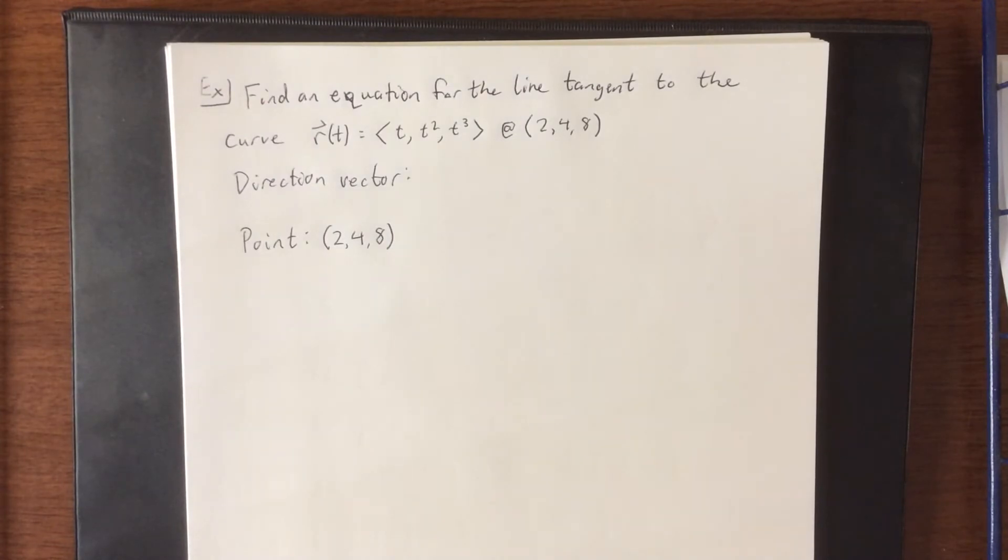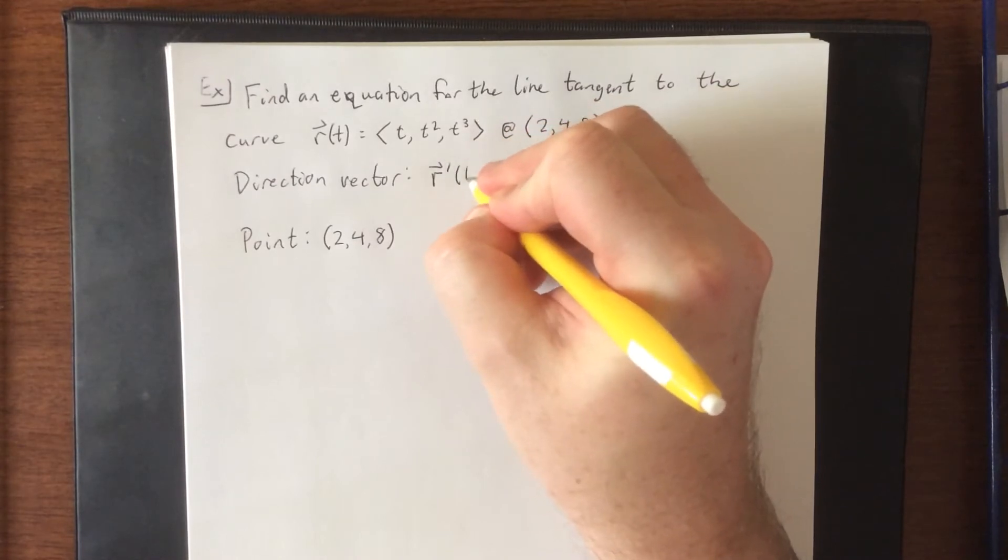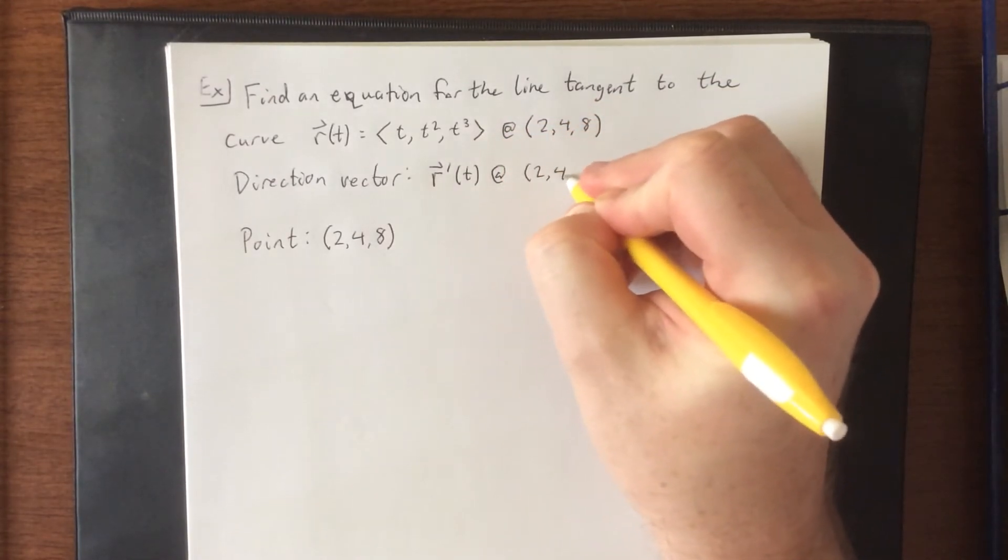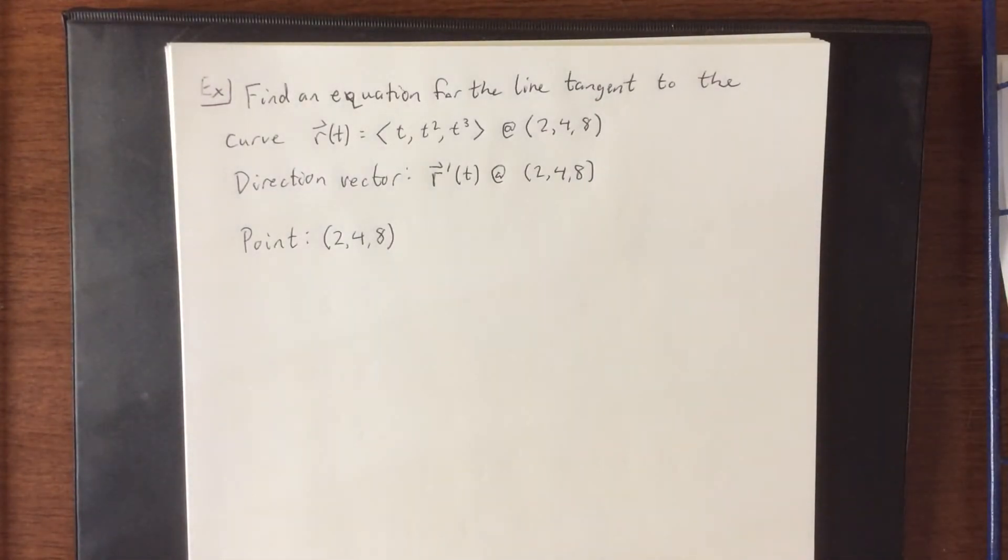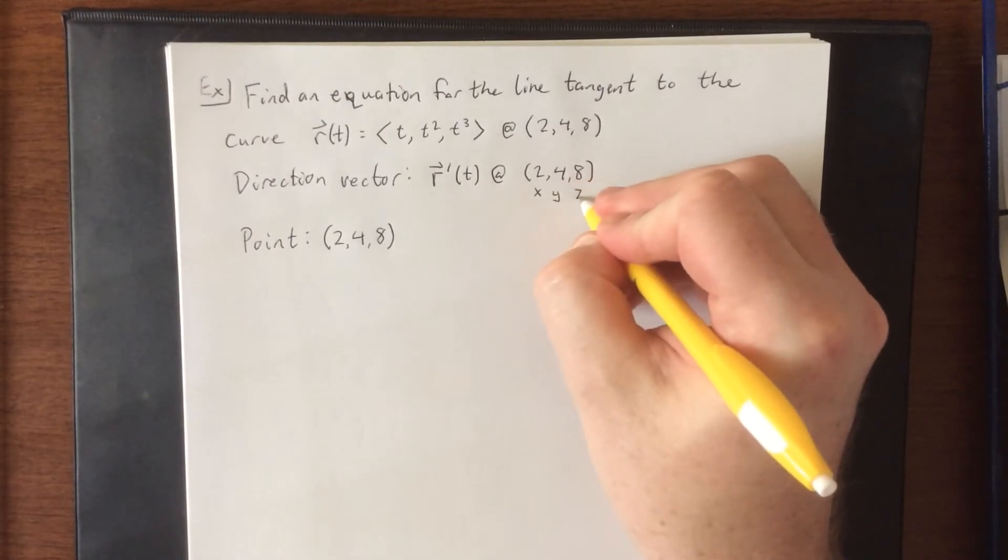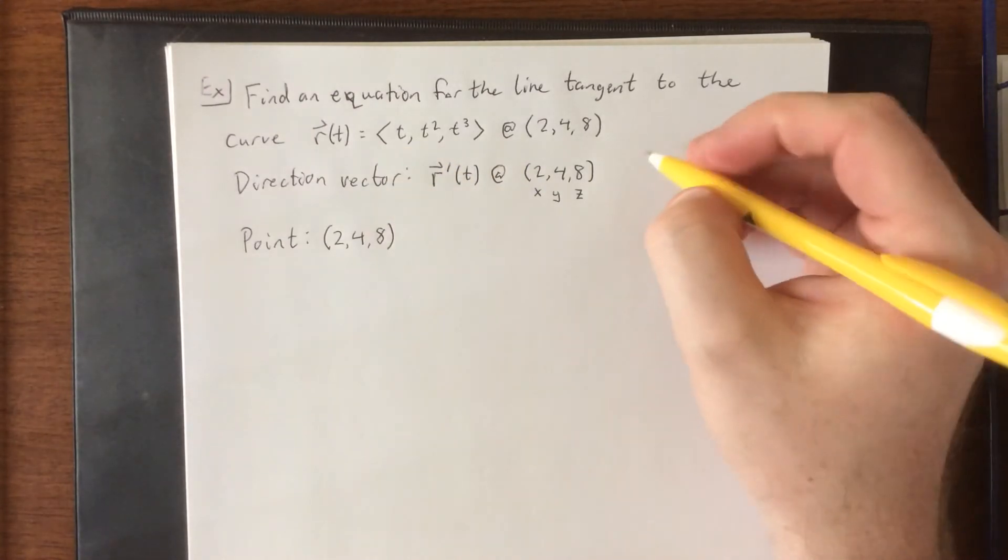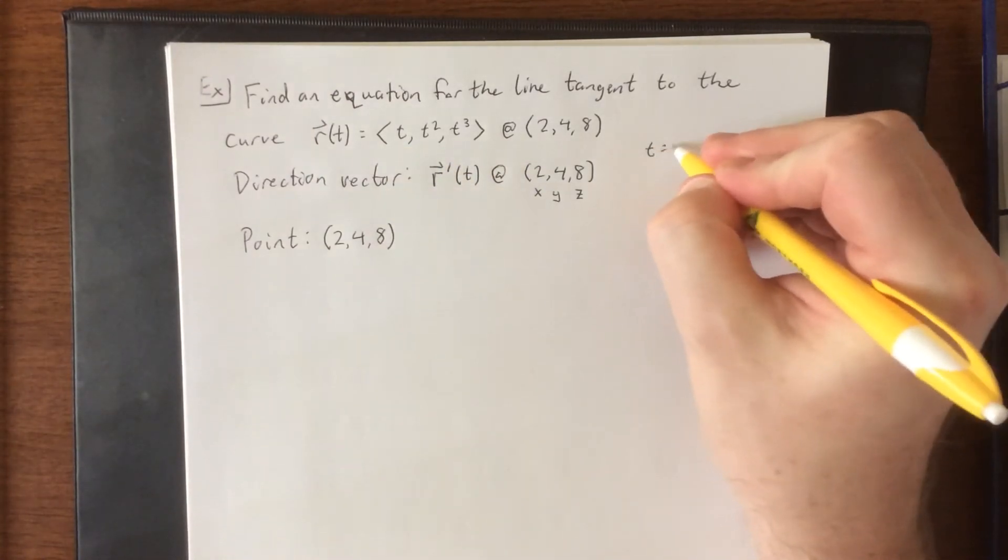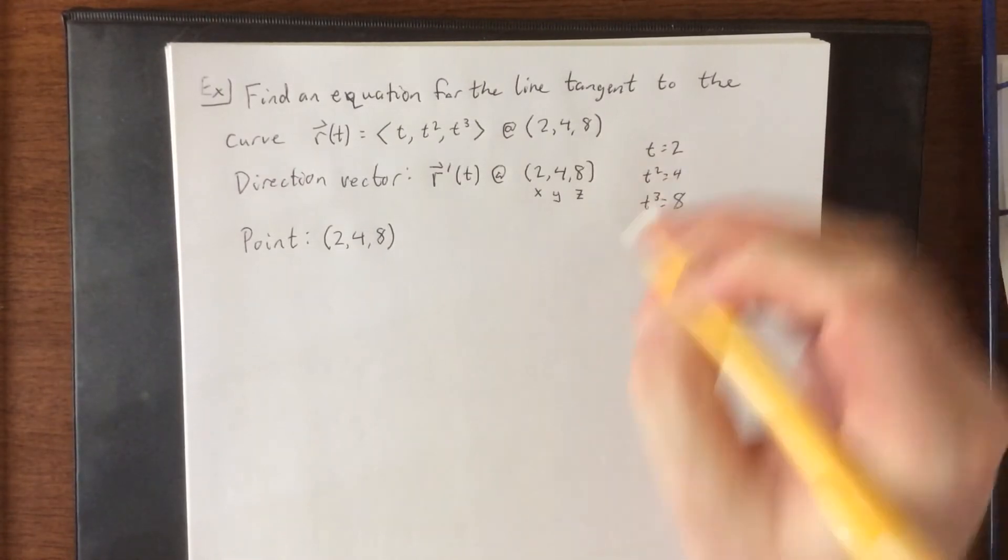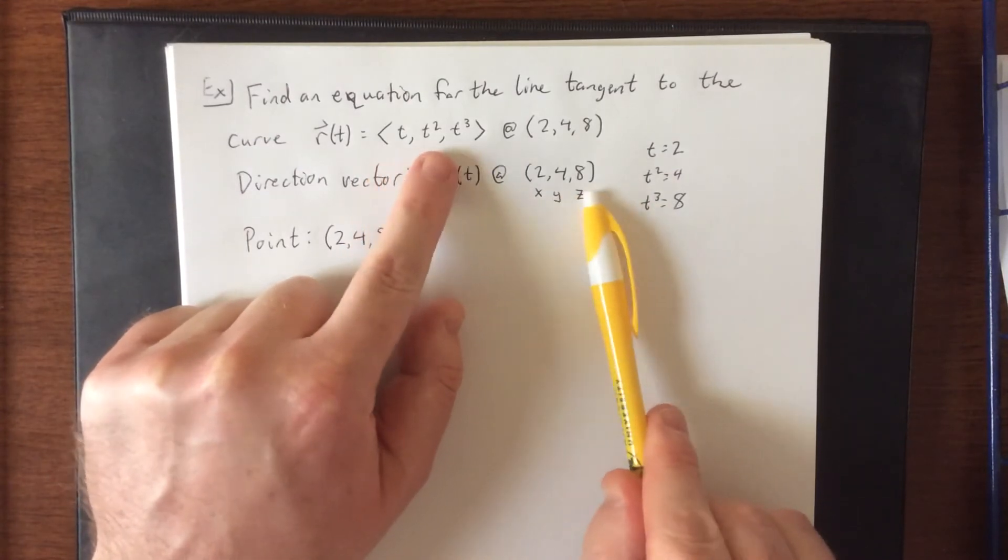Now in order for us to get the direction vector, what we are going to need is the tangent vector at the point (2, 4, 8). When you're given (2, 4, 8), what you're really being given is x, y, and z. Translating those back into your component functions for the curve, what we're really saying is that t is 2, t squared is 4, and t cubed is 8, setting the corresponding components or coordinates equal to each other.